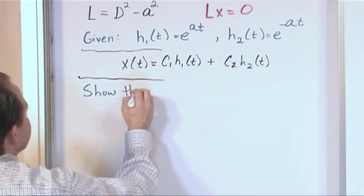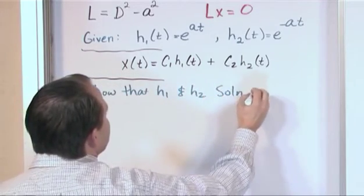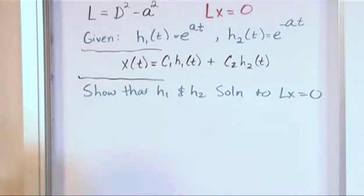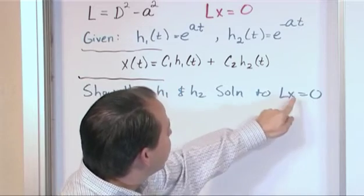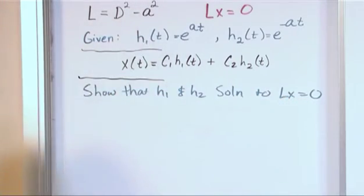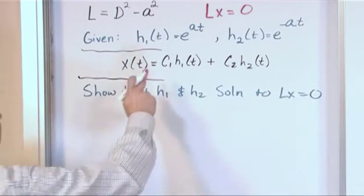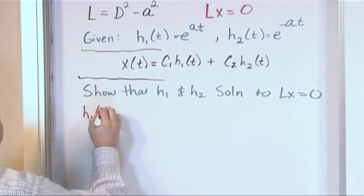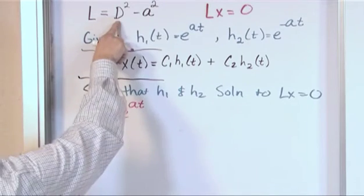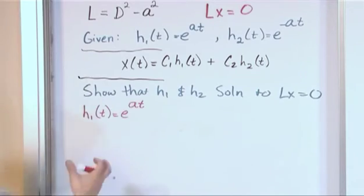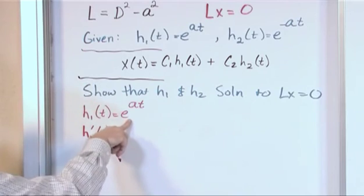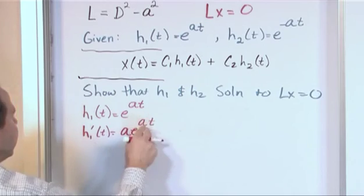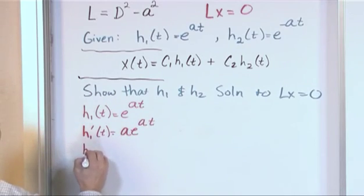Let's show that h1 and h2 are solutions to lx equals zero. That's why we use operator notation — everything is wrapped up concisely. So let's look at h1: h1 of t equals e to the at. We have a second derivative in the operator, so we'll need two derivatives. h1 prime of t — the derivative of this exponential — is a times e to the at, where a comes out by the chain rule. Let's go ahead and take the second derivative since we know we're going to need it.